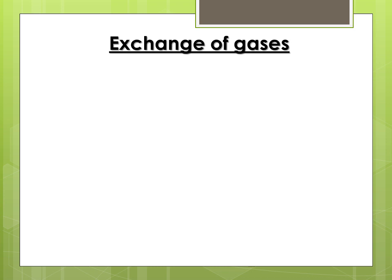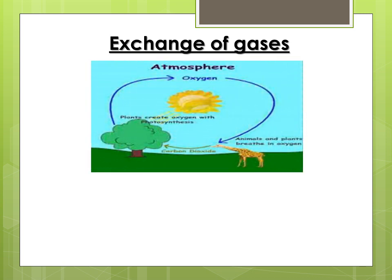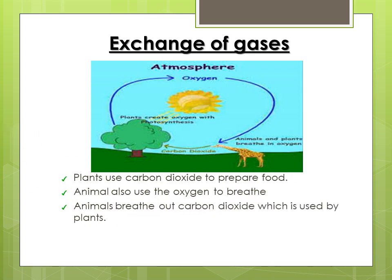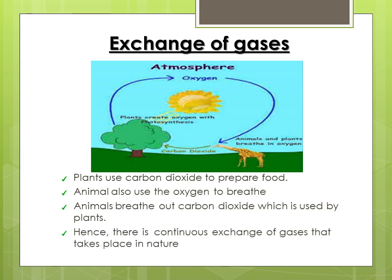Now let us take a look at how plants and animals depend on each other on the basis of exchange of gases. Plants use carbon dioxide to prepare food, and in this process they release oxygen. Animals use this oxygen to breathe, and breathe out carbon dioxide which is then used by plants. Hence there is a continuous exchange of gases that takes place in nature.